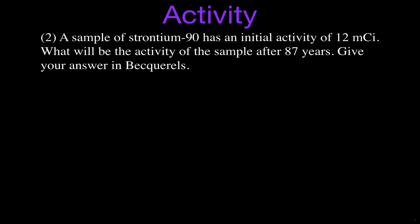That's question number 1. Question 2 says a sample of strontium-90 has an initial activity of 12 millicuries. Curies is an older term for activity — now we use Becquerels — so we're going to convert from millicuries to Becquerels in a moment. We have the strontium-90 sample and we want to know what will be the activity of the sample after 87 years. We want to give our answer in Becquerels.